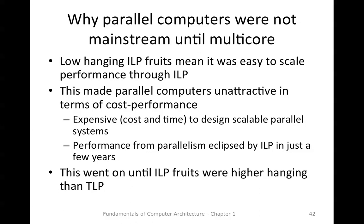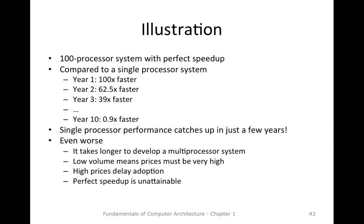Let me give an illustration of the performance improvement from ILP versus parallel computers. Suppose we have a 100-processor system with perfect speedup — meaning performance scales in perfect proportion to the number of processors. In year one, our parallel computer is 100 times faster than a comparable single-processor system. However, if we wait one more year, that single-processor system would have increased about 50% in performance because of ILP improvements, since increased transistor count was proportional to performance increases.